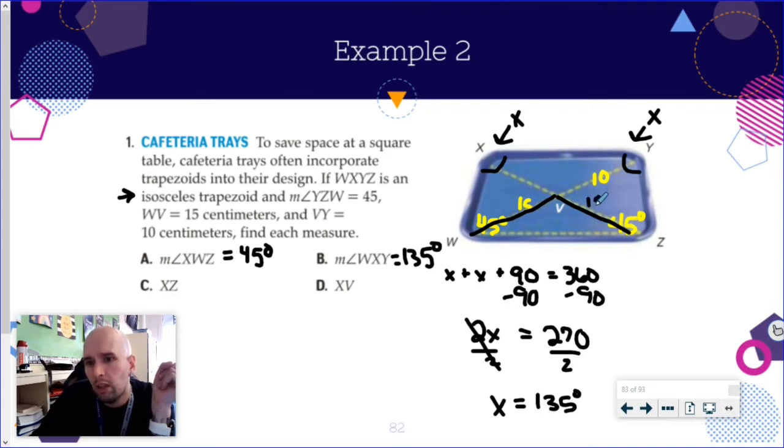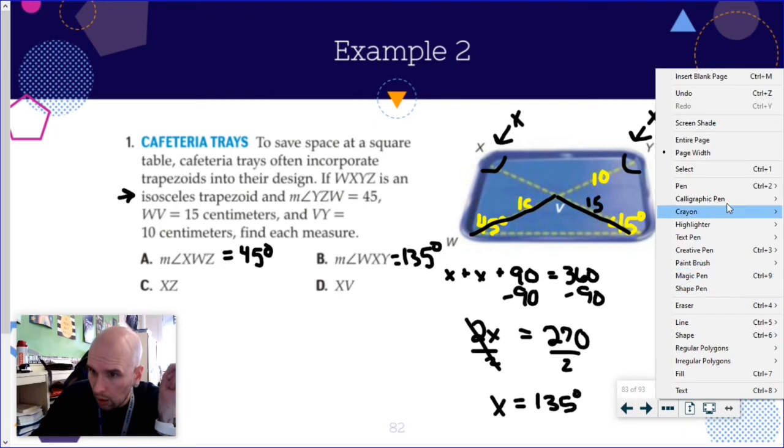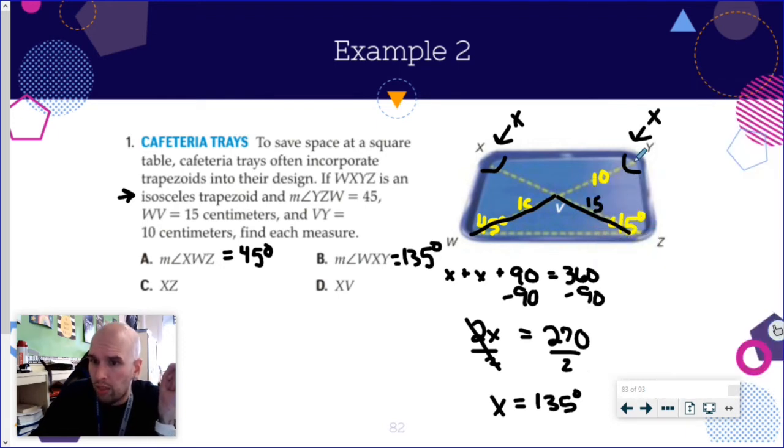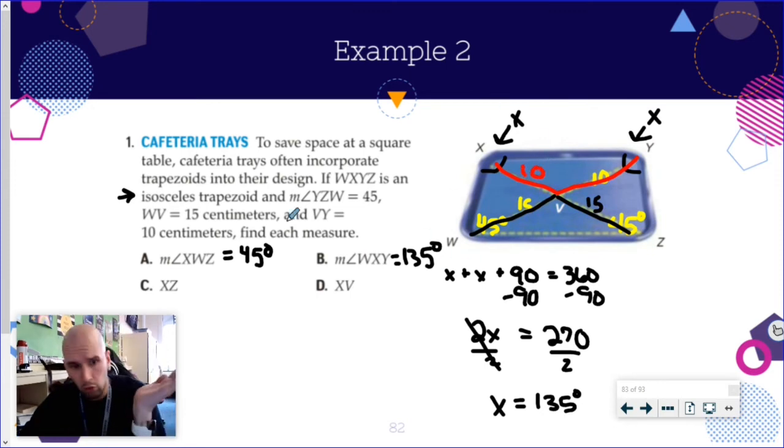So this side is going to be 15. Similarly, whatever this side is, is going to be the same as that side. So that is going to be 10. So let's see if that helps us. XZ is this whole thing, which is 10 plus 15, which is 25.